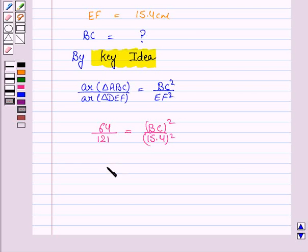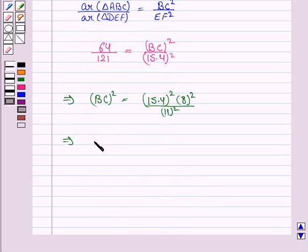Now, we have BC² is equal to 15.4² times 64 divided by 121. 64 can be written as 8² and 121 can be written as 11². Taking square root on both sides we have BC is equal to 15.4 times 8 upon 11 and that gives us length of side BC as 11.2 cm.